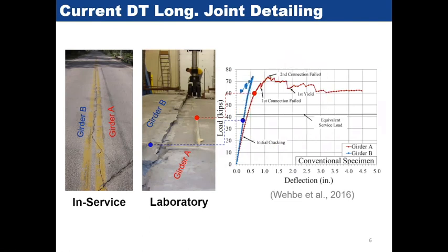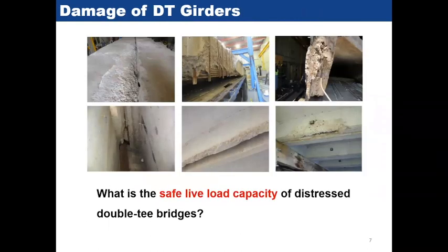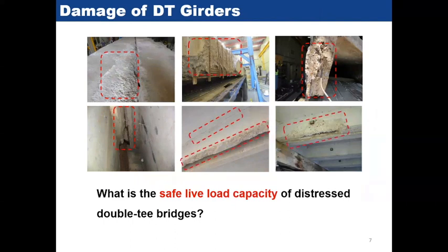This shows that the conventional joint is not structurally sufficient, and if you use it, you cannot meet AASHTO requirements. Other types of damage reported include cover deterioration, exposed tendons, deterioration of the concrete at the end of the girder, and water leak underneath the joint. So there are many types of damage to consider.